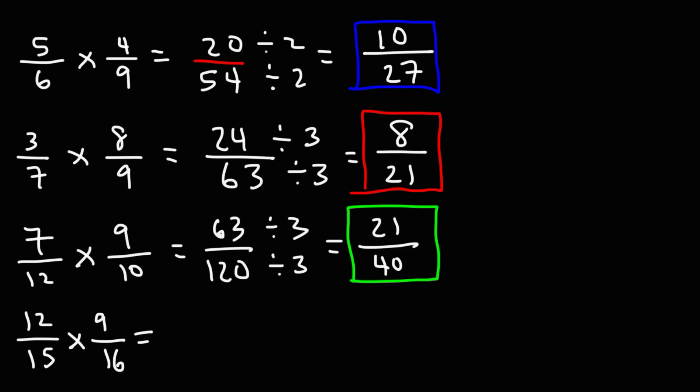Now for the next one, what you can do to make it easier, because if you multiply 12 by 9, you're going to get a big number and then you have to reduce it. Instead, I'm going to show you another way in which you can get the same answer, a much simpler way. So the first fraction, let's break it down. We could break down the first fraction into 4 and 3. 12 is 4 times 3. 15, we can break that into 5 times 3.